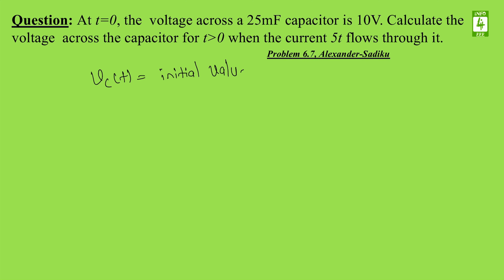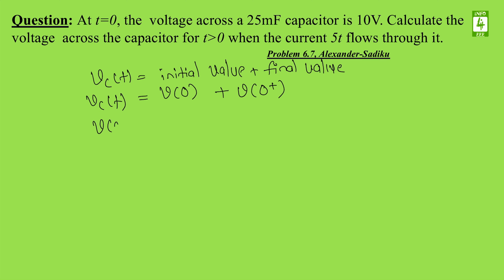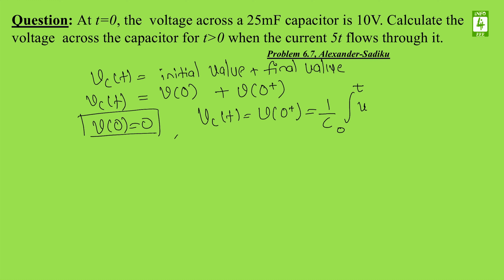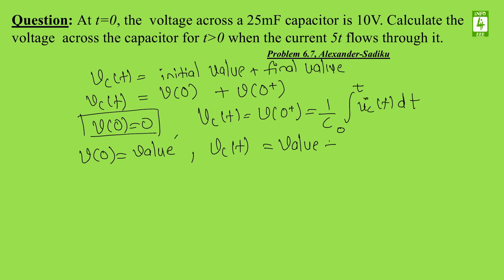So v_c(t) will become: initial value plus final value. The initial value is represented as v(0⁻) and the final value as v(0⁺). If the capacitor is initially uncharged, then v(0⁻) = 0, so v_c(t) becomes (1/C) integral from 0 to t of i_c(t) dt. If the voltage has some initial value, the voltage across the capacitor will be initial value plus (1/C) times the integral.